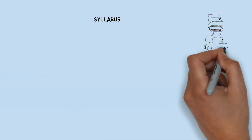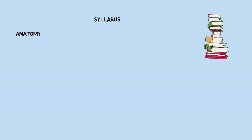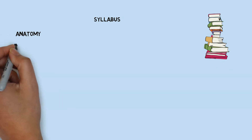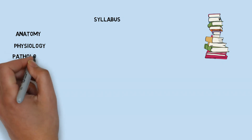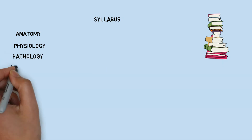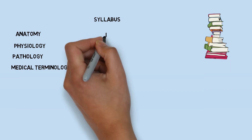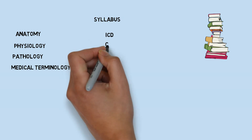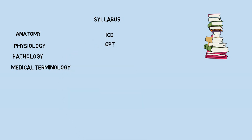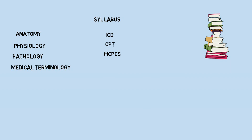The syllabus of medical coding covers anatomy, physiology, pathology, and medical terminology across all body level systems. After that, we have ICD-10-CM, CPT-4, and HCPCS. This is the entire medical coding syllabus.